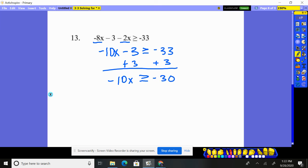Put these together, -30, divide by -10. What happens to the inequality when we divide? It flips. x ≤ 3 for number 13.